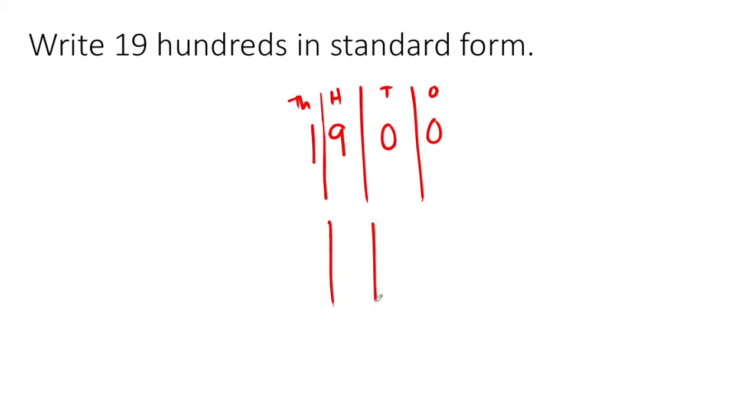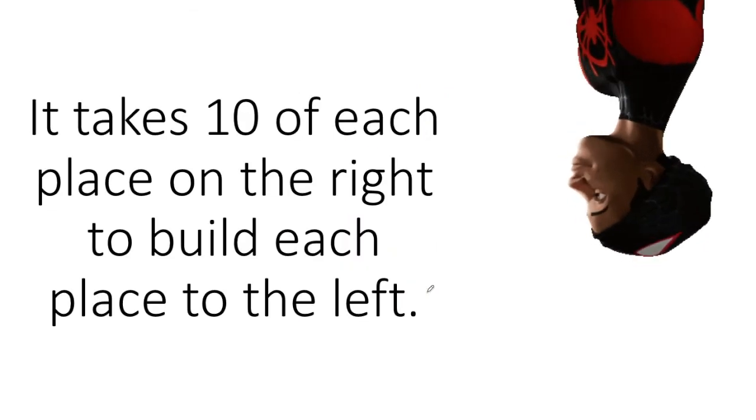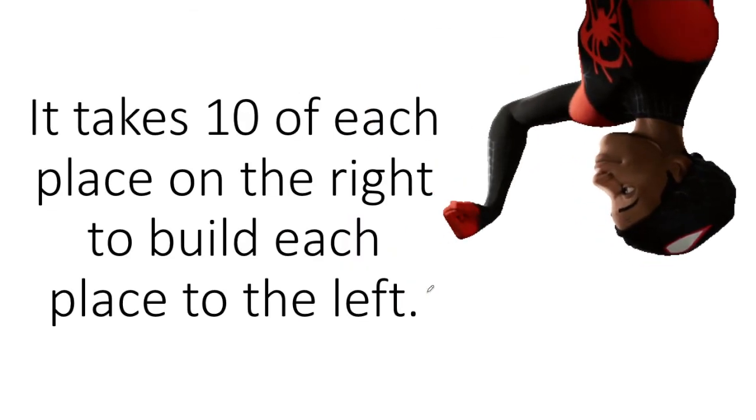Or if my place value chart had been drawn completely from the start, when I go to put the 19 in the 100 spot, I'm going to be like, oh, I know. This 10 hundreds makes 1,000. So it's really 1,900. It takes 10 of each place on the right to build each place to the left.